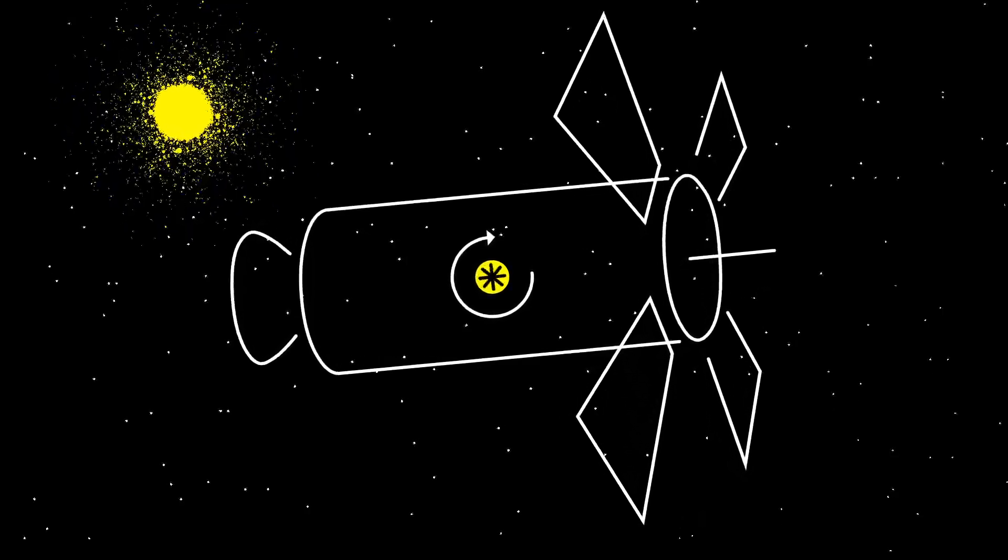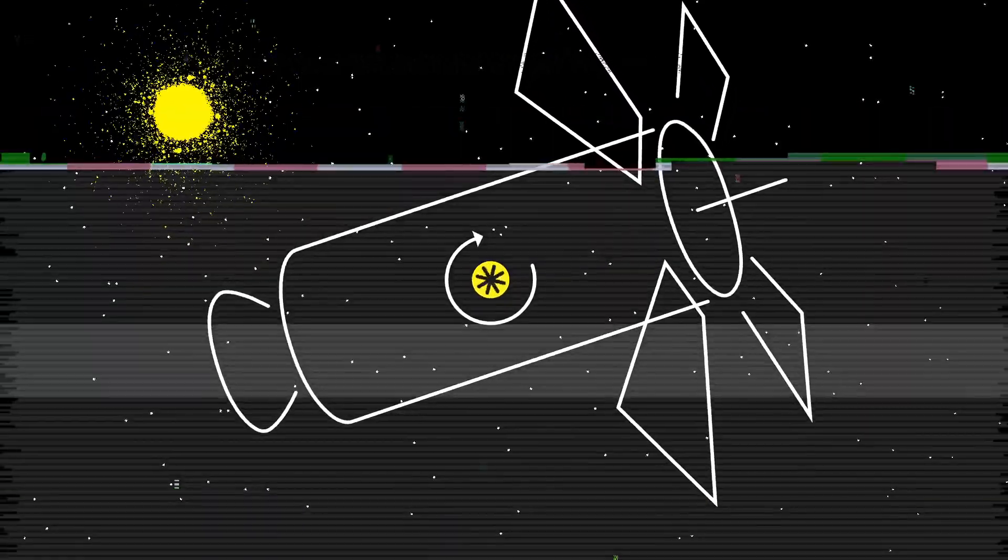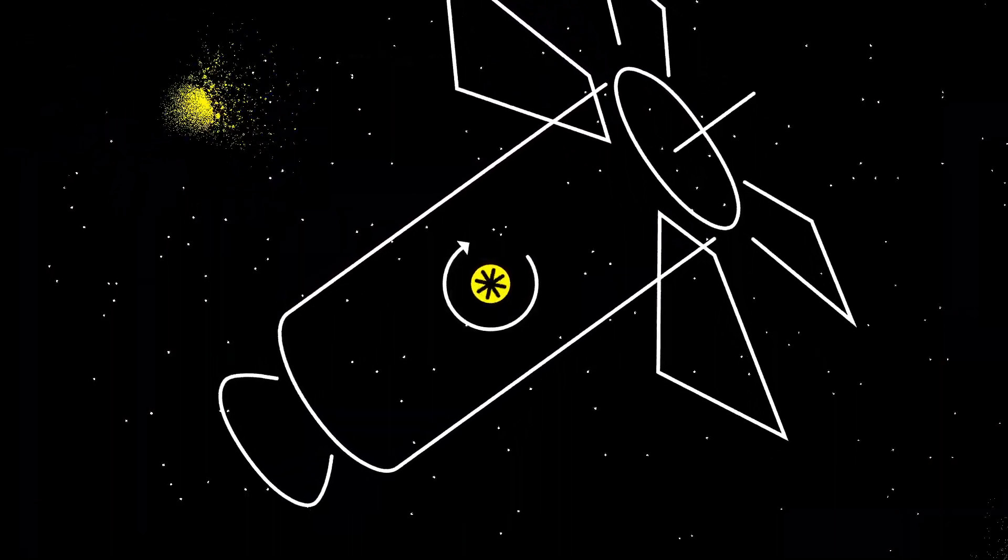The motors that spin that wheel need to exert a torque to make that happen, and the same opposing torque is then exerted back on the spacecraft, causing it to spin as well.